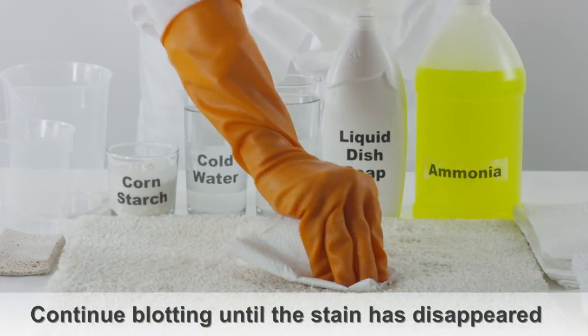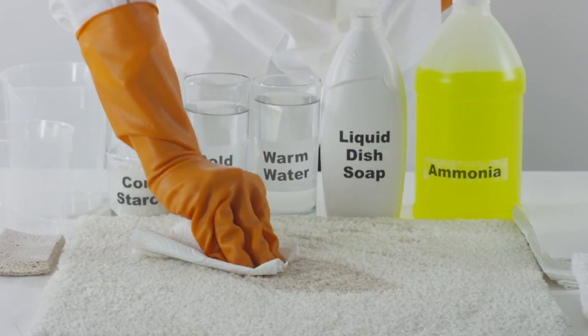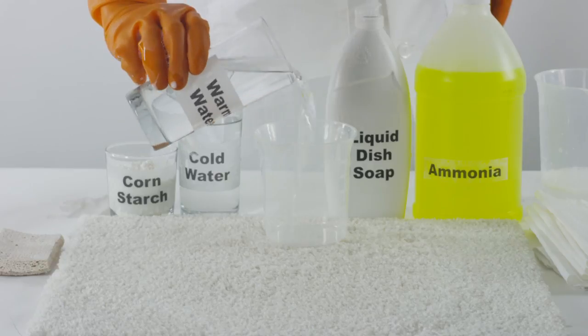Continue blotting the area until the stain has disappeared. If you can still see the milk stain, you could also use ammonia when you're wondering how to clean milk out of carpet.